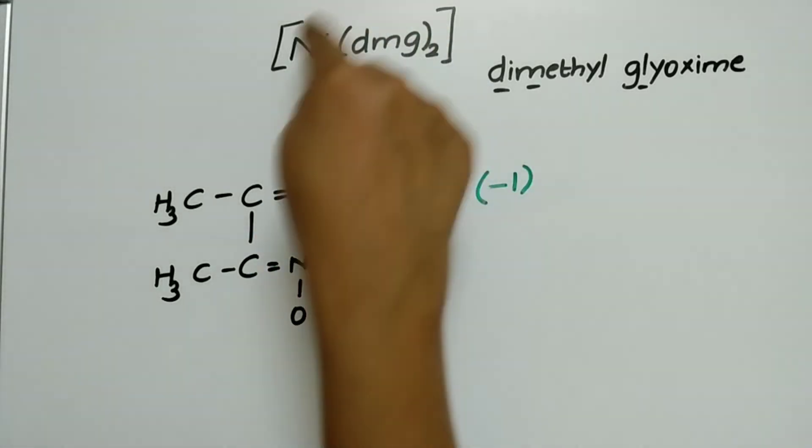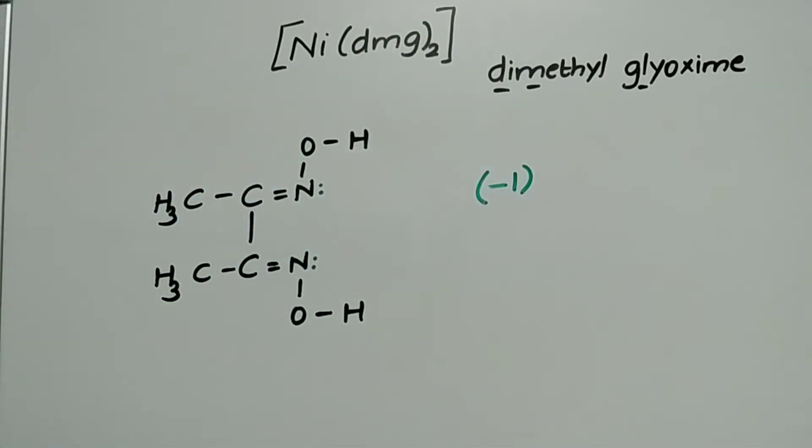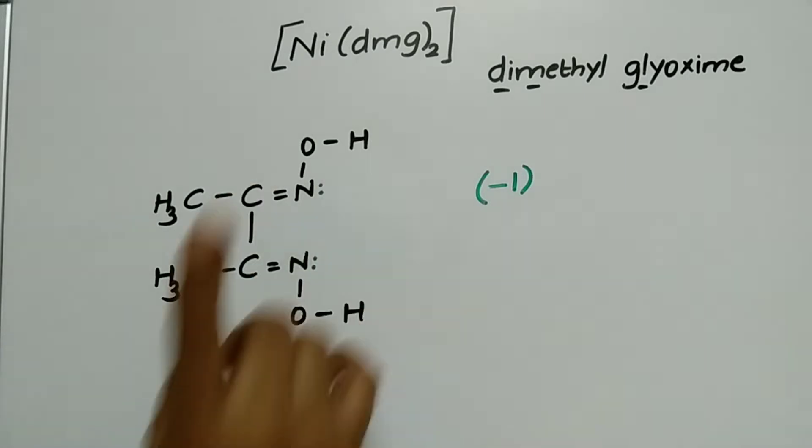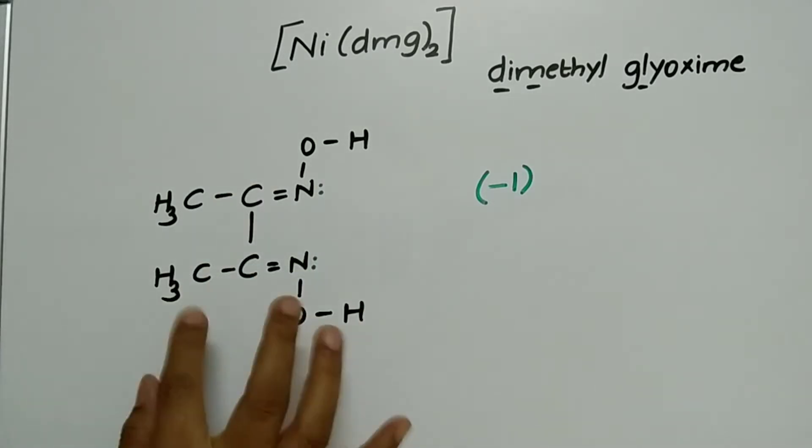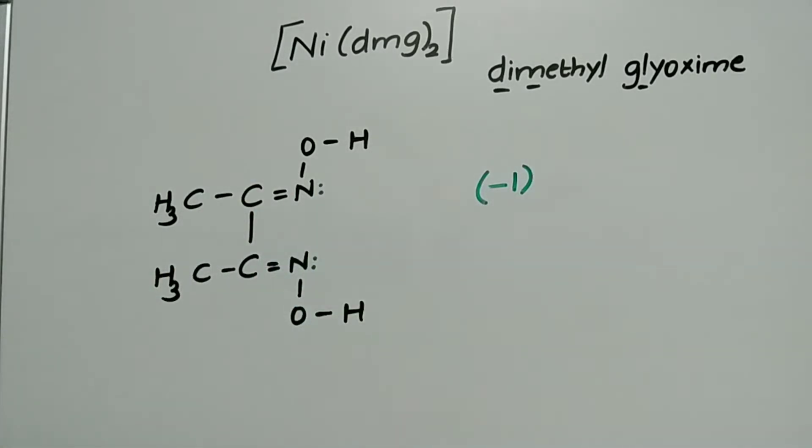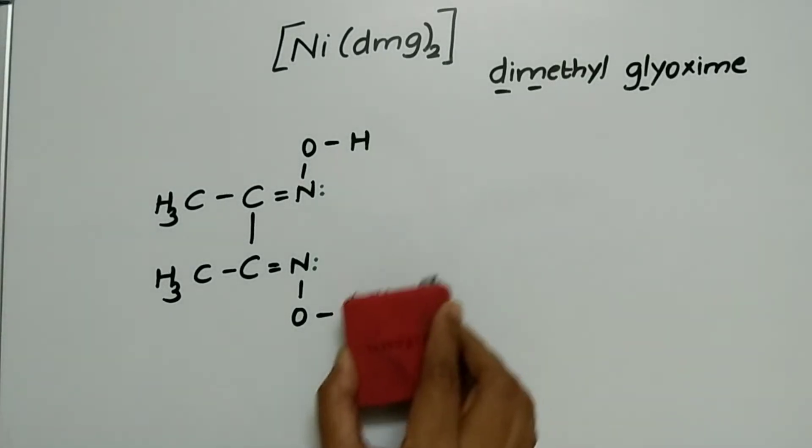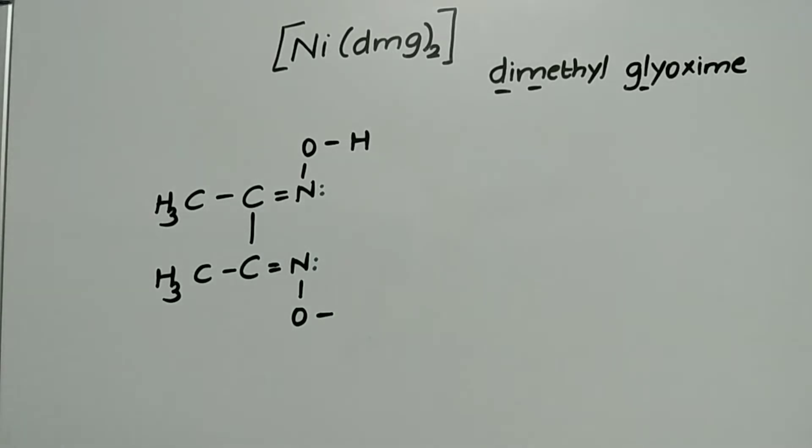Now, what is the complex given to us? Ni(DMG)₂, that is the complex given to us. Two times DMG, this is the DMG structure for one DMG. One more DMG we need. One more time I will draw this. At that time I will remove one hydrogen from here. Let us check now.